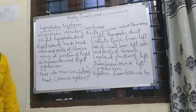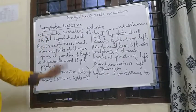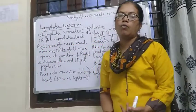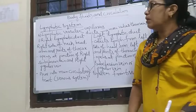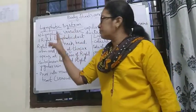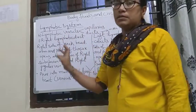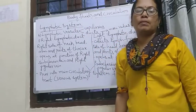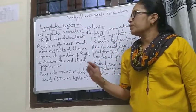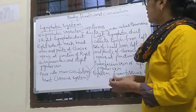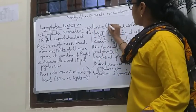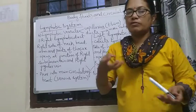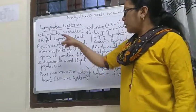Hello students. Now we discuss about the lymphatic vessels. In the previous class we learned about the lymph, how lymph is formed, and that lymphatic vessels are two types. We already learned about the capillaries — the small vessels that contain a thin endothelium through which the lymph is filtered from the blood.